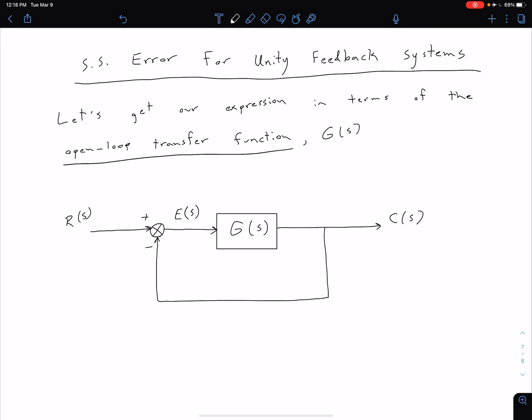Let's go ahead and add our E of S right here. This is our error signal, because by definition, it's going to be our input R of S minus our output C of S. Of course, we have a unity gain feedback, which means our H of S is just equal to 1.